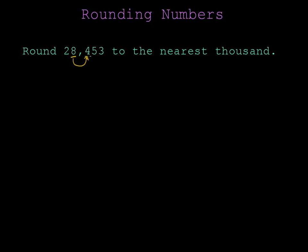Well, this number is 4, so that means I keep the number an 8. But I have to fill in the rest of these digits with 0 so that my answer is 28,000. If I didn't put these zeros in, all I would have is 28 and that would be way too small. So I need the zeros to hold the place value.